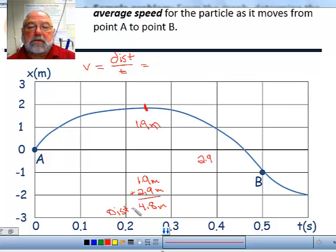Now we need to calculate our speed. So the distance is 4.8 meters divided by the elapsed time which is 0.5 seconds. And that gives us a velocity, or I'm sorry, not velocity, average speed of 9.6 meters per second. Okay, let's move on.